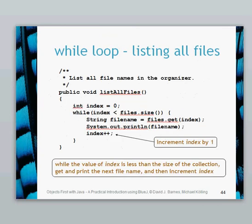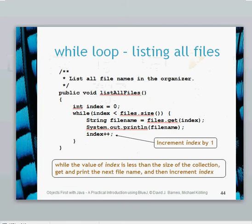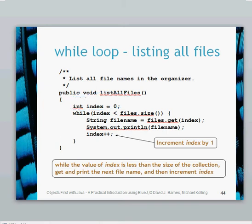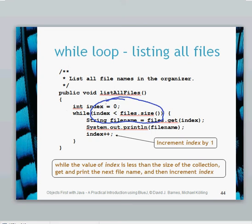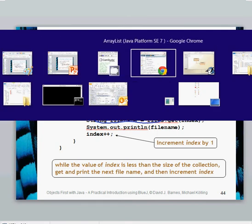Let's have a look at a while loop for listing all the files. This while loop is not going to stop when it finds a file — this is just an example of listing all files. It does exactly the same as the previous for-each loop, but using a while loop. First of all, we've got the index here which must be created each time: int index equals zero. That starts at the beginning of the ArrayList.